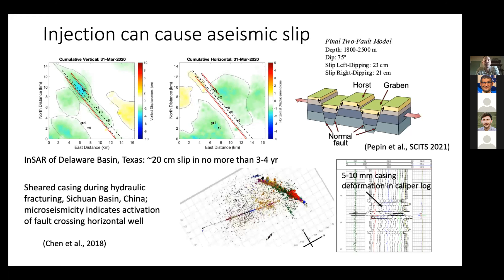Aseismic slip can also happen during high-rate injection such as hydraulic fracturing. Here's an example from the Sichuan Basin in China where a well was being hydraulically fractured. The microseismicity cloud lights up a structure — presumably a fault — and this essentially sheared the well. A caliper log shows casing deformation interpreted as several centimeters of slip, with no earthquakes large enough to explain it. So this is presumably aseismic slip triggered by fluid injection.